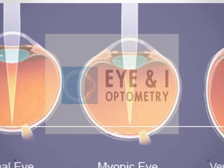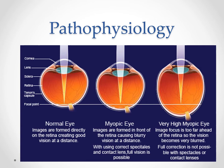First, we're going to start with what a normal eye looks like. As light enters through the cornea into the lens, it will focus on the back part of the eye, which is the retina. An image here will be seen clearly to the viewer.